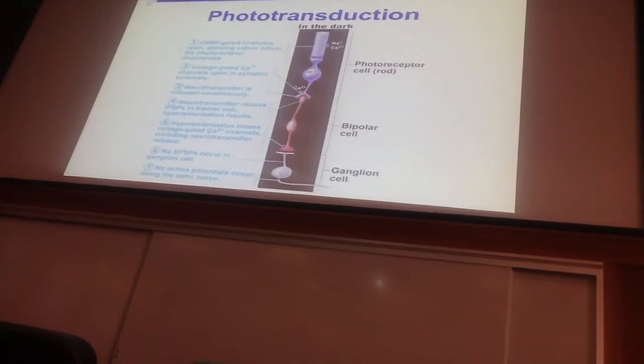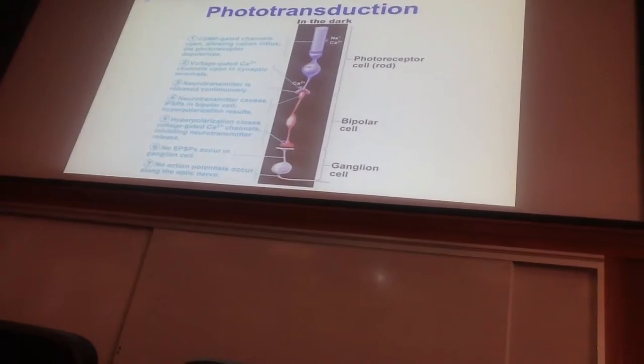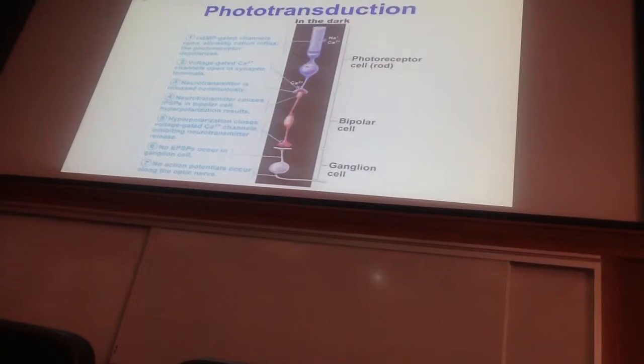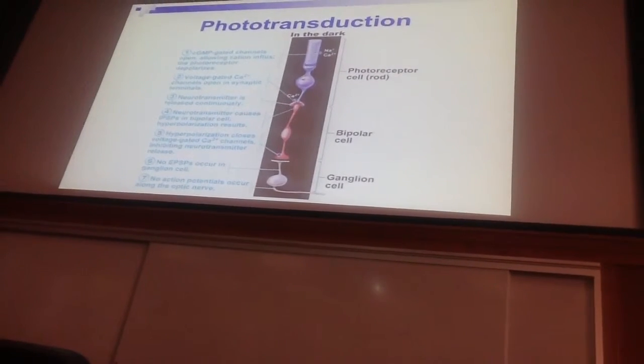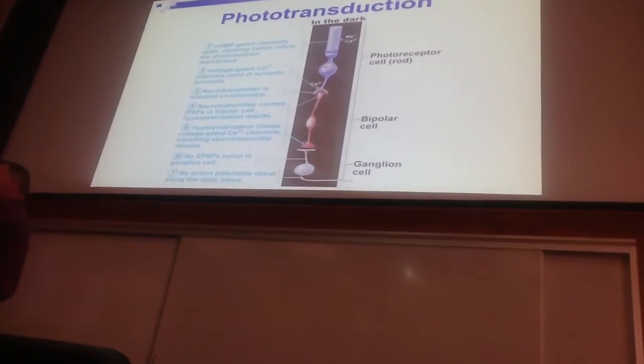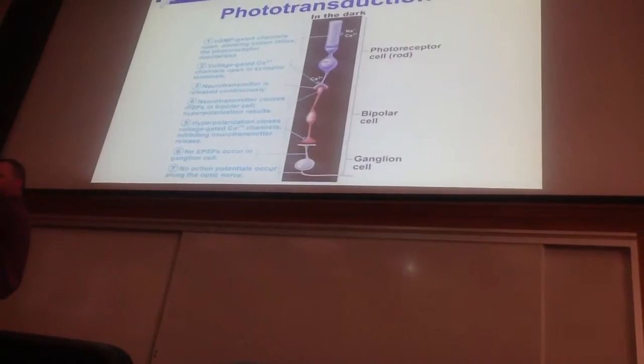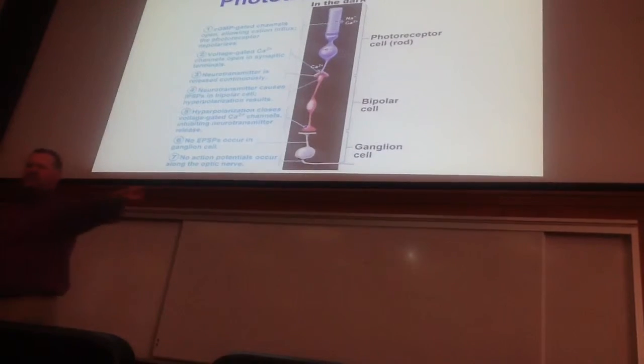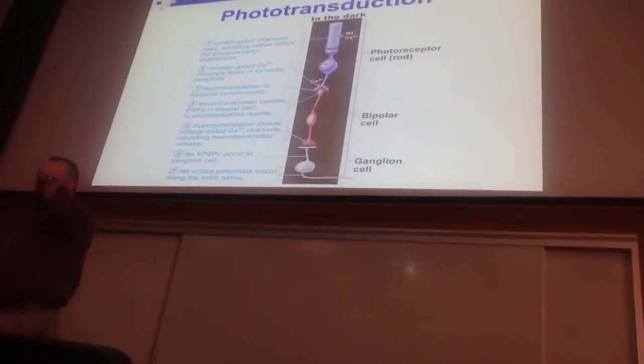It's constantly releasing neurotransmitter. The neurotransmitter it releases is inhibitory in nature and shuts down the bipolar cell at the synapse. The bipolar cell is kept quiet. It's not able to release any neurotransmitter onto the ganglion cell. The ganglion cell doesn't send any action potentials. That's what happens in the dark.